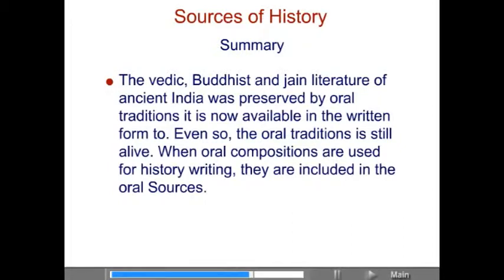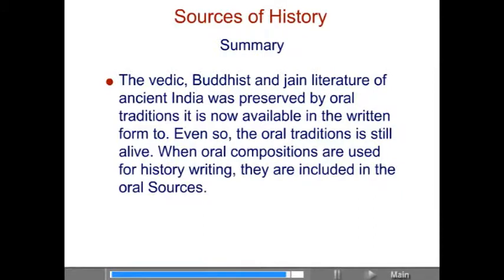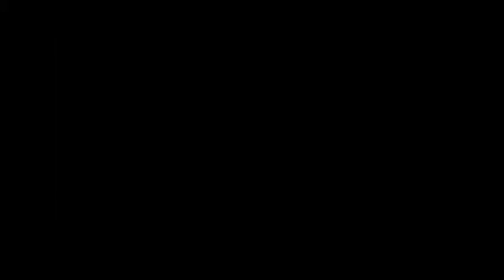The Vedic, Buddhist and Jain literature of ancient India was preserved by oral tradition and is now available in written form too. Even so, the oral tradition is still alive. When oral compositions are used for history writing, they are included in the oral sources.